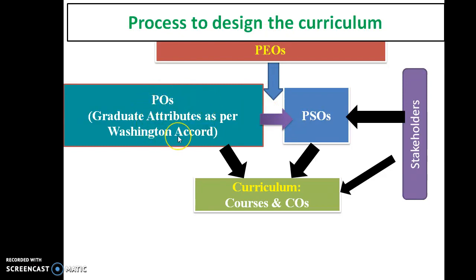The graduate attributes are as per the Washington Accord. I mentioned in my previous lecture the importance of the Washington Accord — why it is so important and what the domains of learning are. Please refer to the previous videos for more detail. The specific outcomes are derived from these domains.